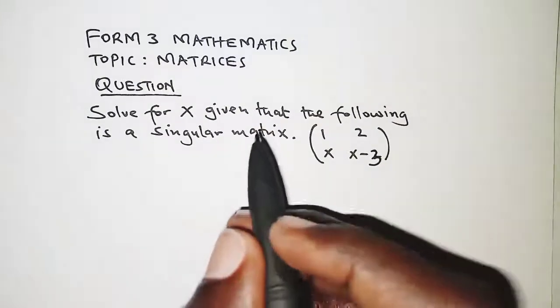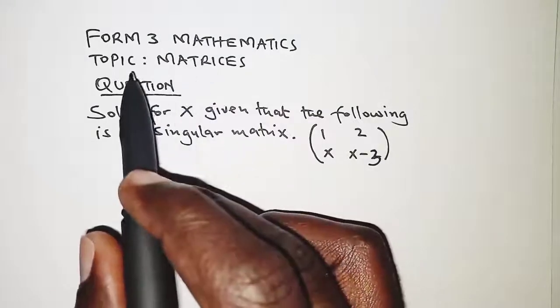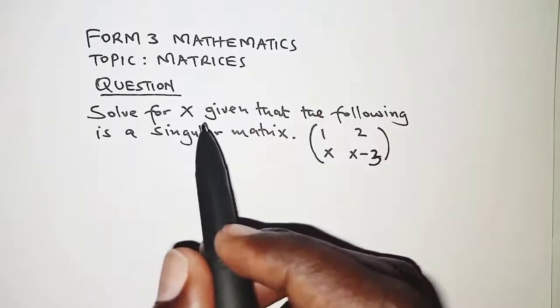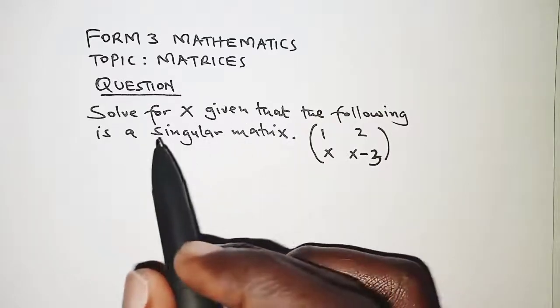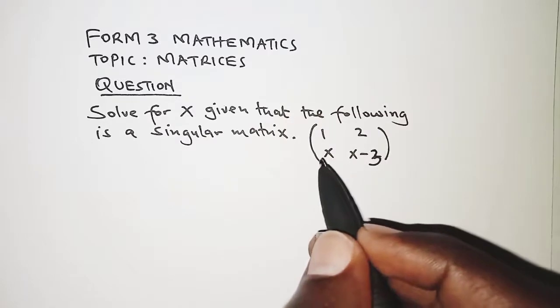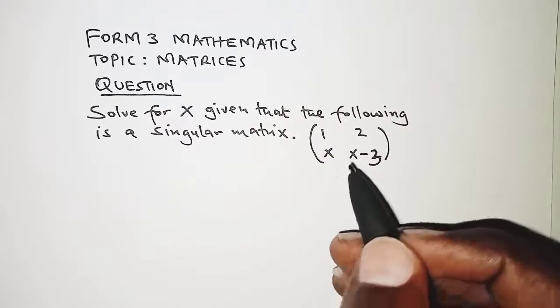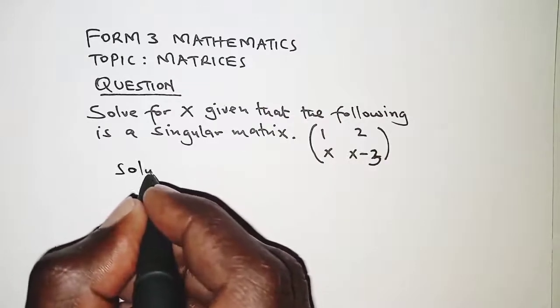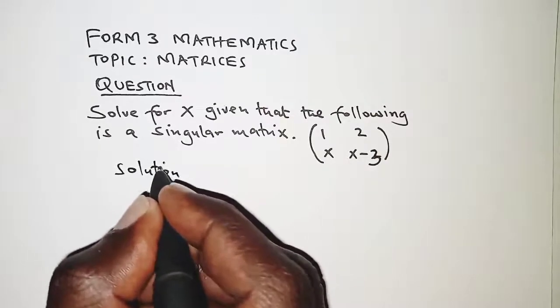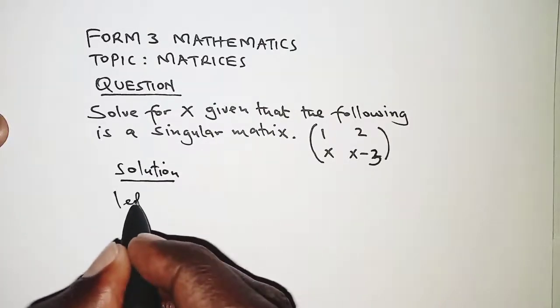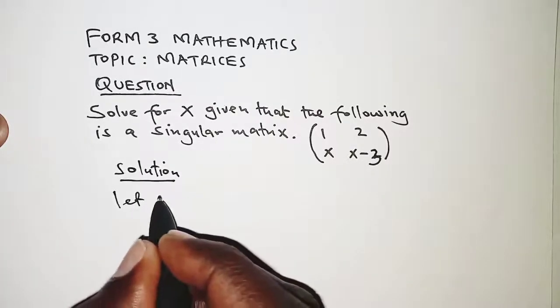Welcome, this is Form 3 Mathematics. The topic is matrices and the question is: solve for X given that the following is a singular matrix: 1, 2, X, X minus 3. In this problem, we let the matrix be M.